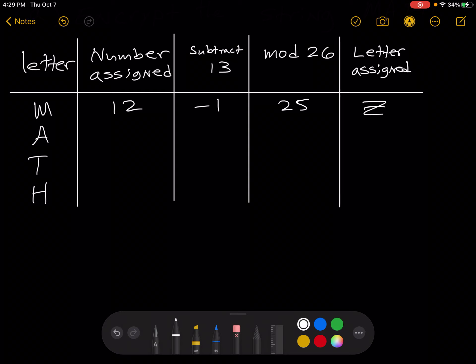Moving on to A. In the table above, A is assigned the number 0. 0 minus 13 is negative 13. And so here we want something congruent to negative 13 mod 26. And that something has to be a number between 0 and 25 inclusive.